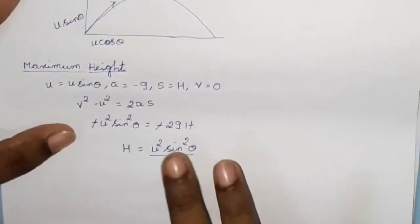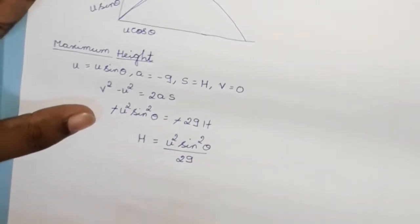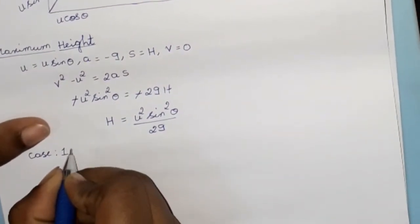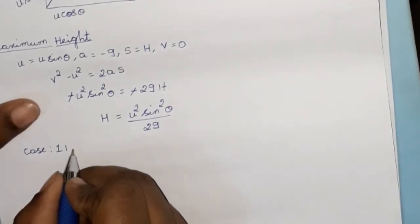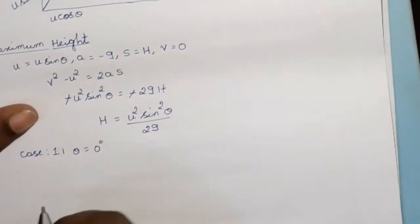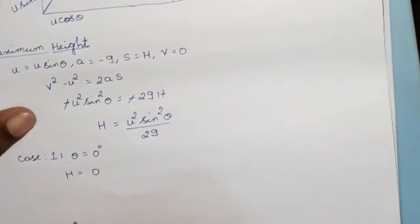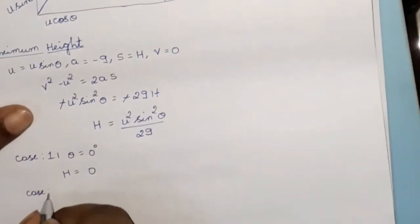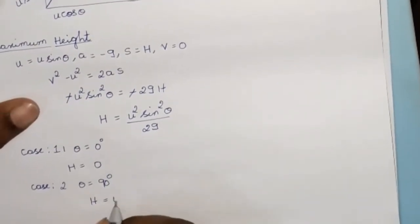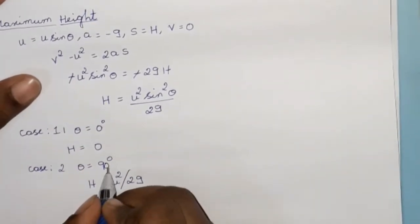After cancelling the negatives, H equals u²sin²θ divided by 2g. Comparing with vertical projection maximum height, which is u²/2g. Case 1: when θ equals 0, h equals 0 — this is horizontal projection. Case 2: when θ equals 90 degrees, h equals u²/2g — this is vertical projection.